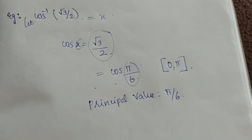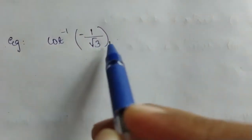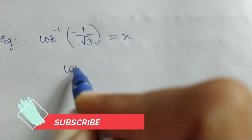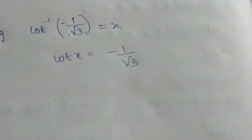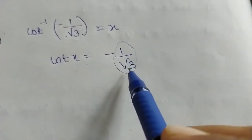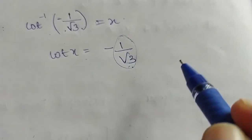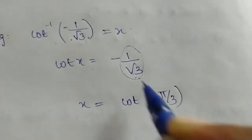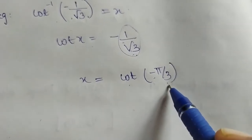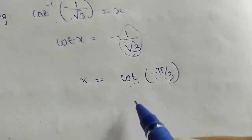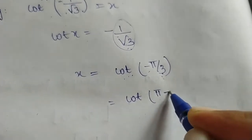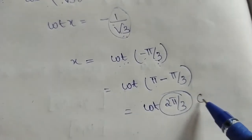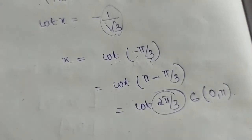Another example: find the principal value of cot inverse of (−1/√3). Let cot x = −1/√3. We know cot(π/3) = 1/√3. Using the property cot(−x) = cot(π − x), we get cot(π − π/3) = cot(2π/3). Since 2π/3 belongs to the open interval (0, π), the principal value is 2π/3.